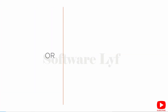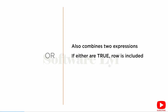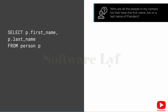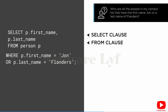Another keyword to combine expressions is OR. OR does exactly what it sounds like — it combines two expressions. If either expression is true, the row is included. If both are false, the row is excluded. Our example question: who are all the people in my contact list that have the first name of John or a last name of Flanders? We add: WHERE p.first_name = 'John' OR p.last_name = 'Flanders'. Any row that matches either of those two conditions will be part of the result set. If a row matches neither condition, it will not be included.